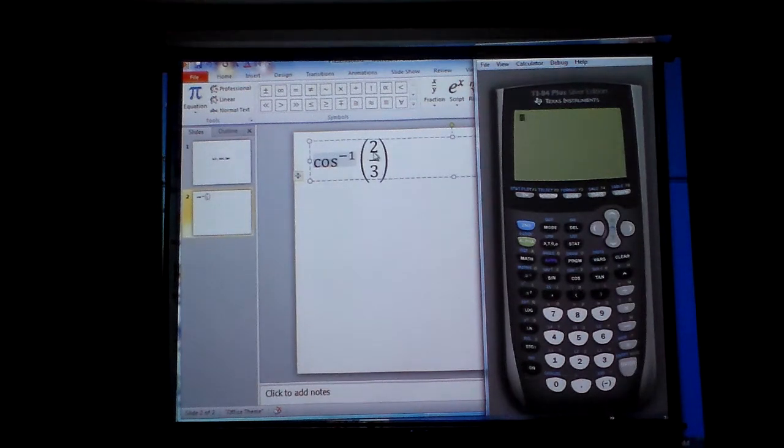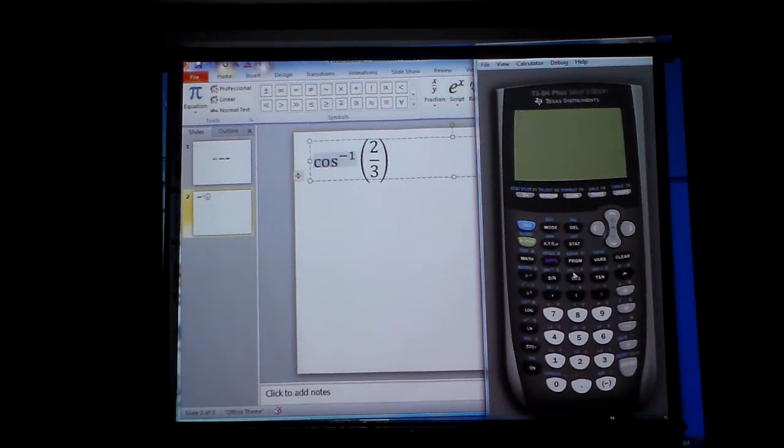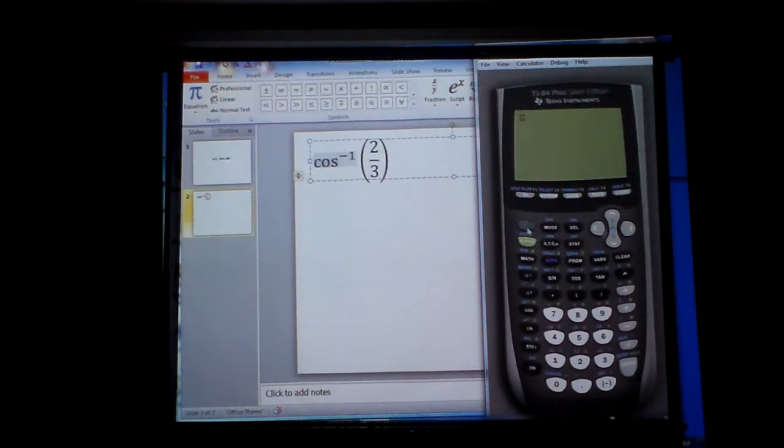Now this is not cosine 2 divided by 3. I want the angle. So this is arc cosine. So that's that cosine negative 1. I'm going to hit second cosine.